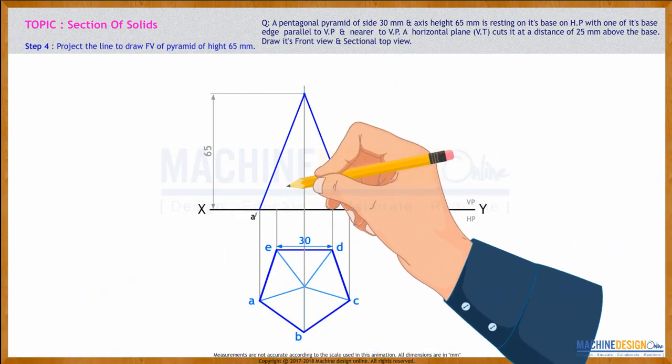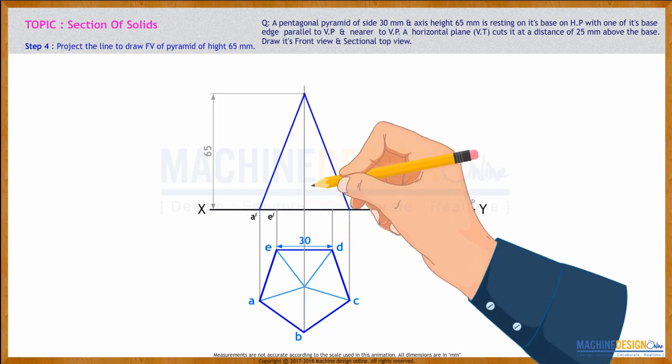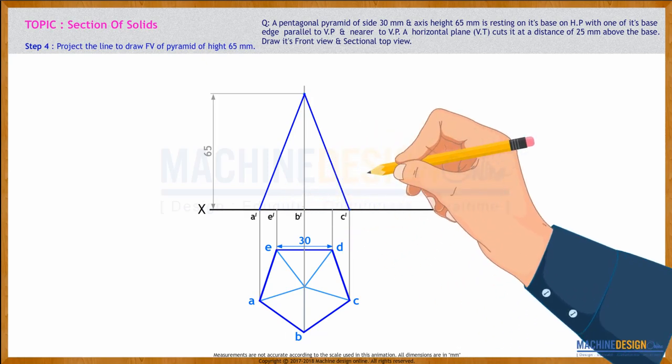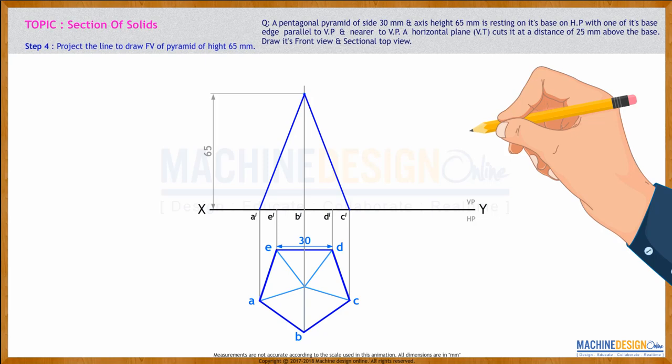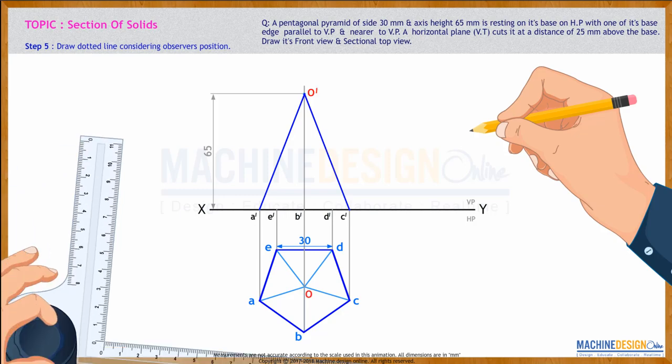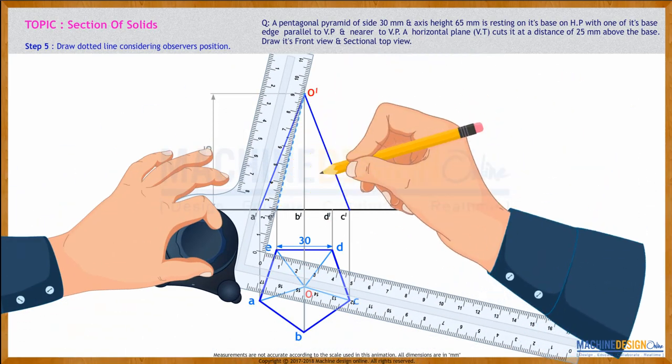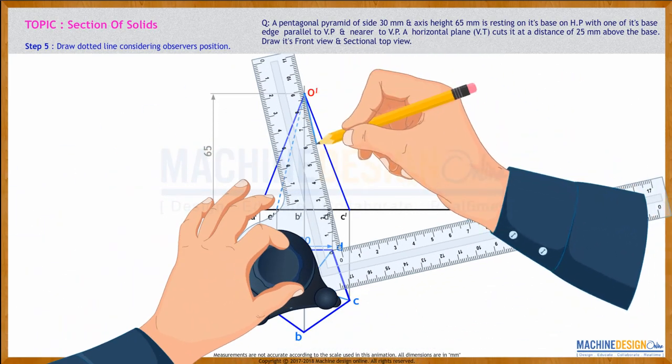Then we'll mark this as A', B', C', and D'. The observer will see from this side, so D and E will be dotted. So O' to D' and O' to E' is dotted.